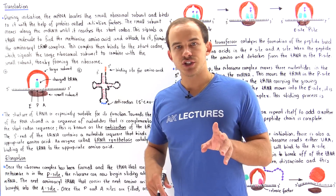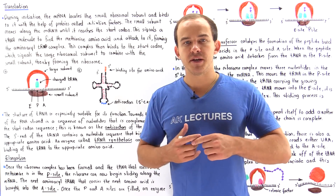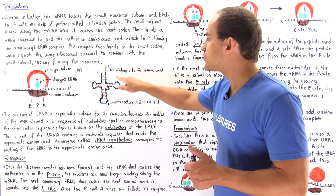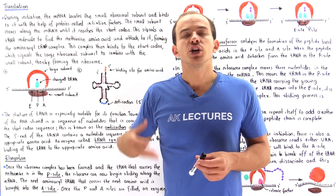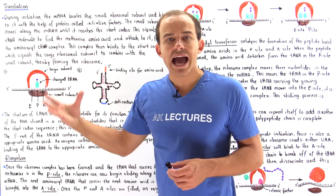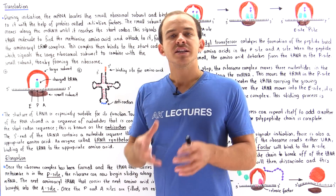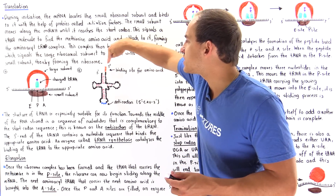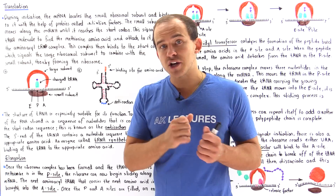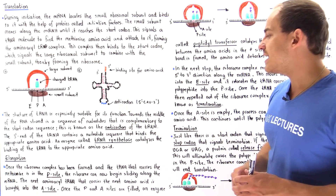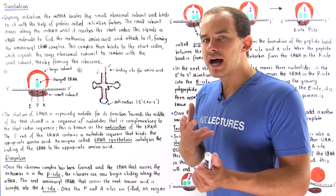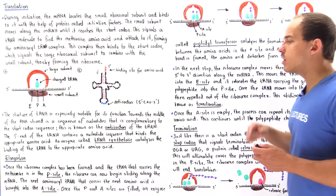There are two important locations on the transfer RNA molecule. We have the 3' end that contains the proper nucleotide sequence responsible for binding to our amino acids. When the tRNA molecule goes out and finds the methionine amino acid, the methionine amino acid binds to the sequence on the 3' end of the tRNA molecule, and the binding takes place with the help of a special enzyme known as tRNA synthetase. tRNA synthetase uses a GTP molecule to bind our amino acid to the 3' end of our tRNA molecule.